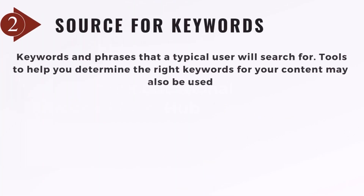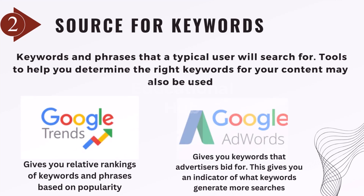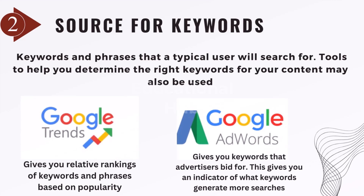Step 2: Source for Keywords. In your domain, start with keywords and phrases that a typical user will search for. Tools to help you determine the right keywords for your content may also be used, such as: Google Trends, which gives you relative rankings of keywords and phrases based on popularity; and Google AdWords, which gives you keywords that advertisers bid for — an indicator of what keywords generate more searches.